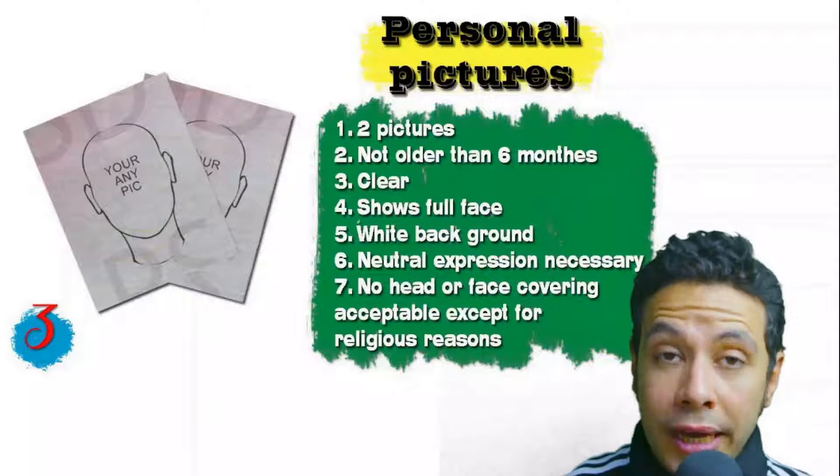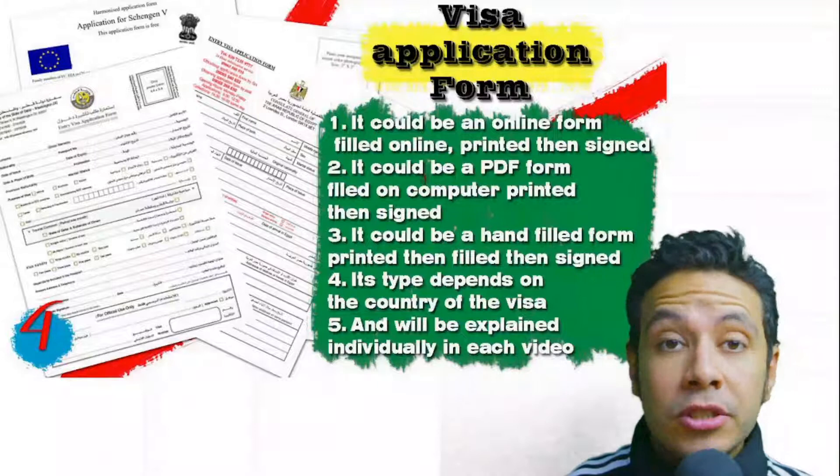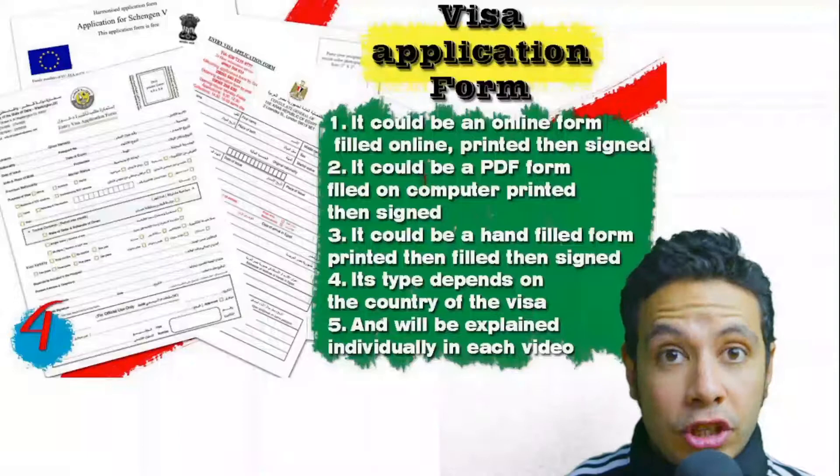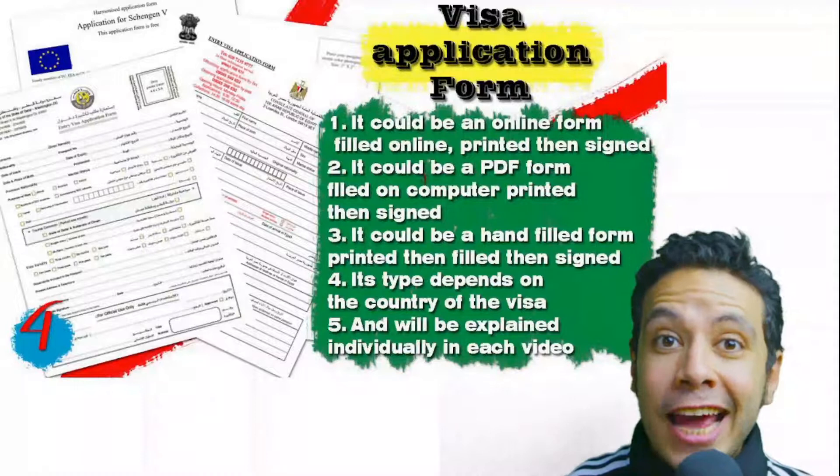For the visa application form, generally you need only one copy, but sometimes two or three copies are required. Visa forms differ from country to country; generally you print and fill it manually, but many countries now provide online platforms. You fill the application form online and then print and sign it — just as we did in the video.